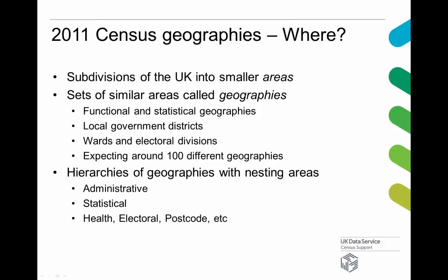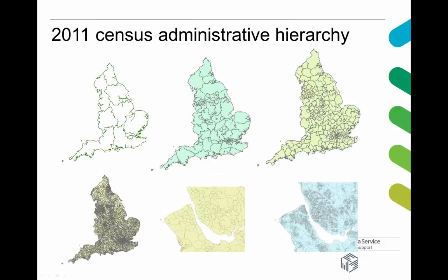There are also several other geographies specific to different uses such as health, electoral, and postcode geographies. Here's an example of the administrative hierarchy: regions, counties, unitary authorities, districts, wards, and then going down to the very smallest area — output areas. Output areas have a minimum population of about 40 households and 100 people, so they're actually very small areas. There are about 150,000 of those in England and Wales.